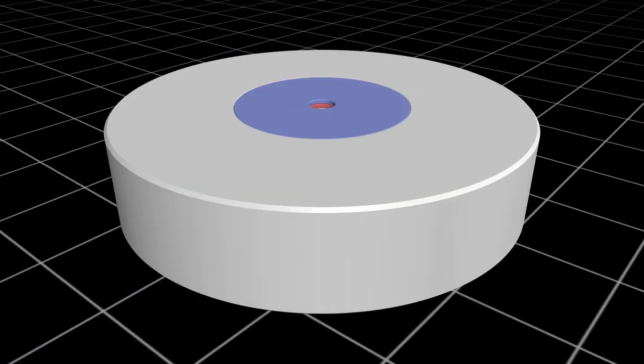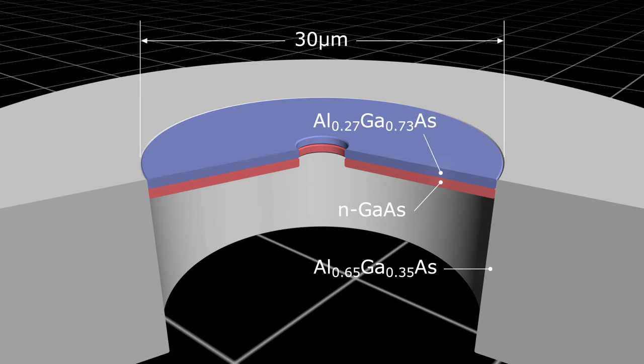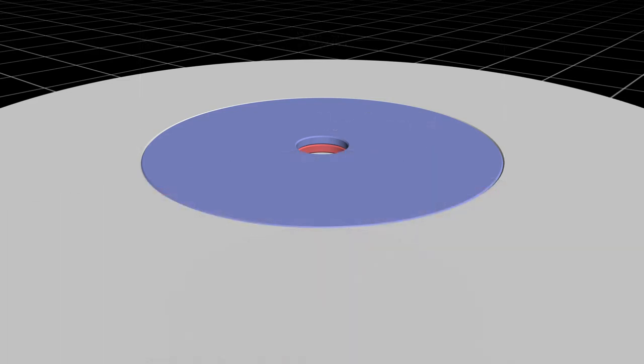This is the structure that we devised for controlling the flow of phonons. It is a drum-like structure having a diameter of 30 micrometers and is fabricated with gallium arsenide-based materials. The film portion vibrates up and down, much like a drum.